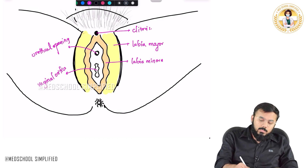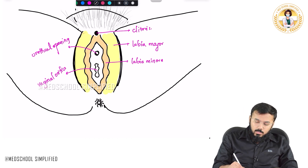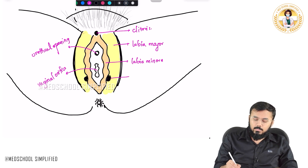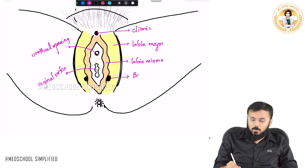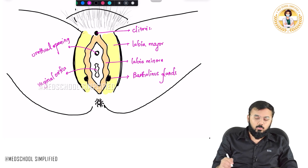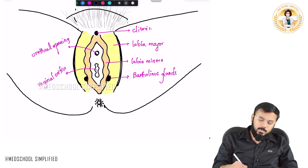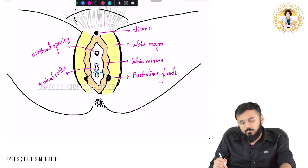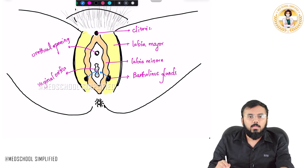Now on the sides of the labia minora, you have got two important glands. These two important glands are called as Bartholin's glands. What do Bartholin's glands do? They release some secretions into the vagina. So this is the function of your Bartholin's glands.